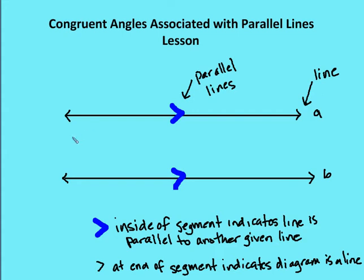When we indicate in a diagram a parallel line, what we do is we mark inside of the segment or the line an arrow in a particular direction. In this case, I can tell that these two lines, A and B, are parallel by the diagrams because I have this indication — this blue arrow in the middle of the line — that's common to both lines. So this tells me that A is parallel to B. Additionally, we mark a line by drawing arrows at the end of the segment, meaning the line runs in both directions infinitely, to the left and to the right.